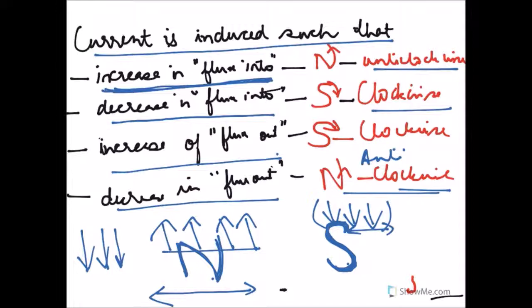In the next part, I am going to give you some solved examples, explaining how to determine the direction of current in coils based on questions from your NCERT book. Thank you.